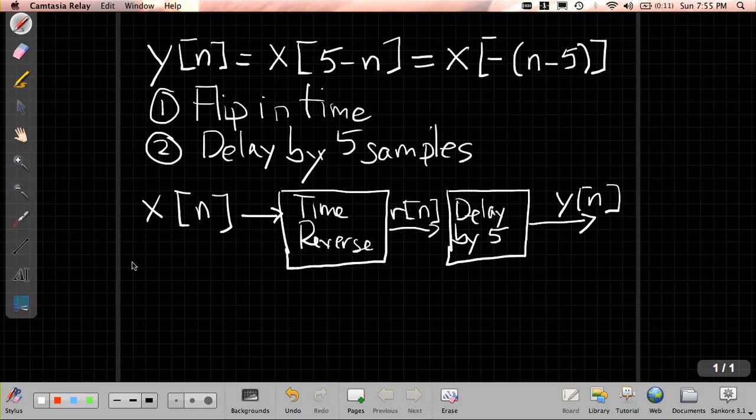So if you want to write equations now for how the first input x relates to the final output y, let's see how that would work. Well, we know the first step, the time reverse we saw in class is that r[n] is x[-n].